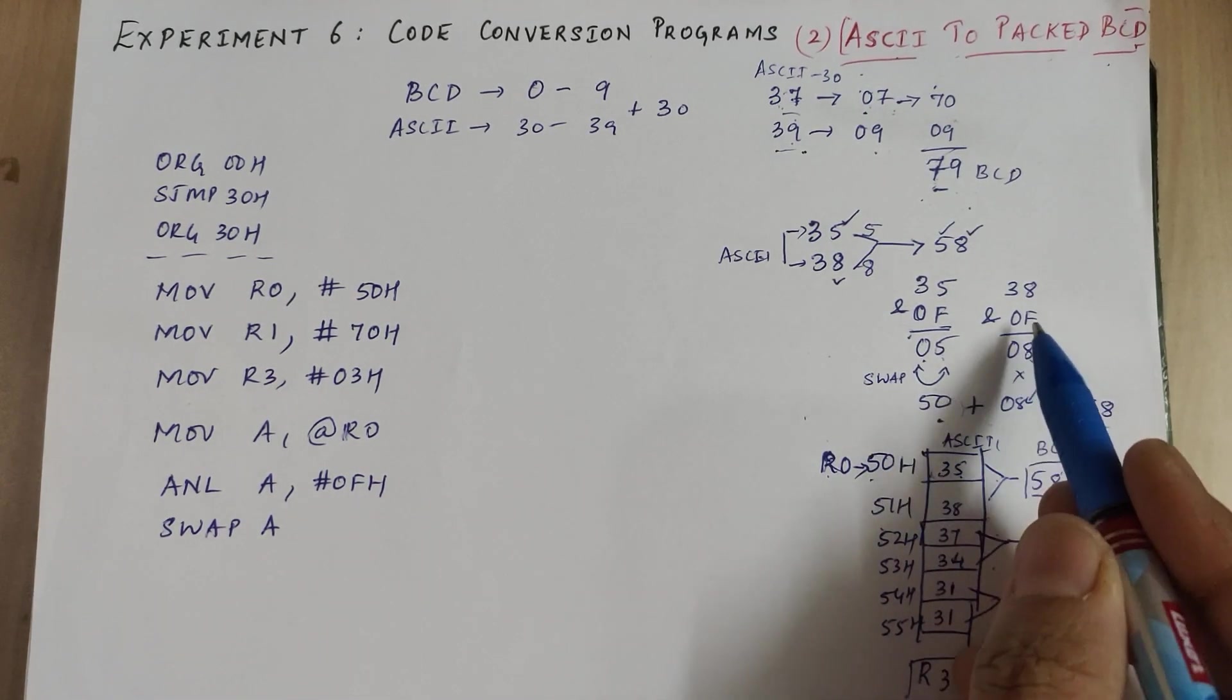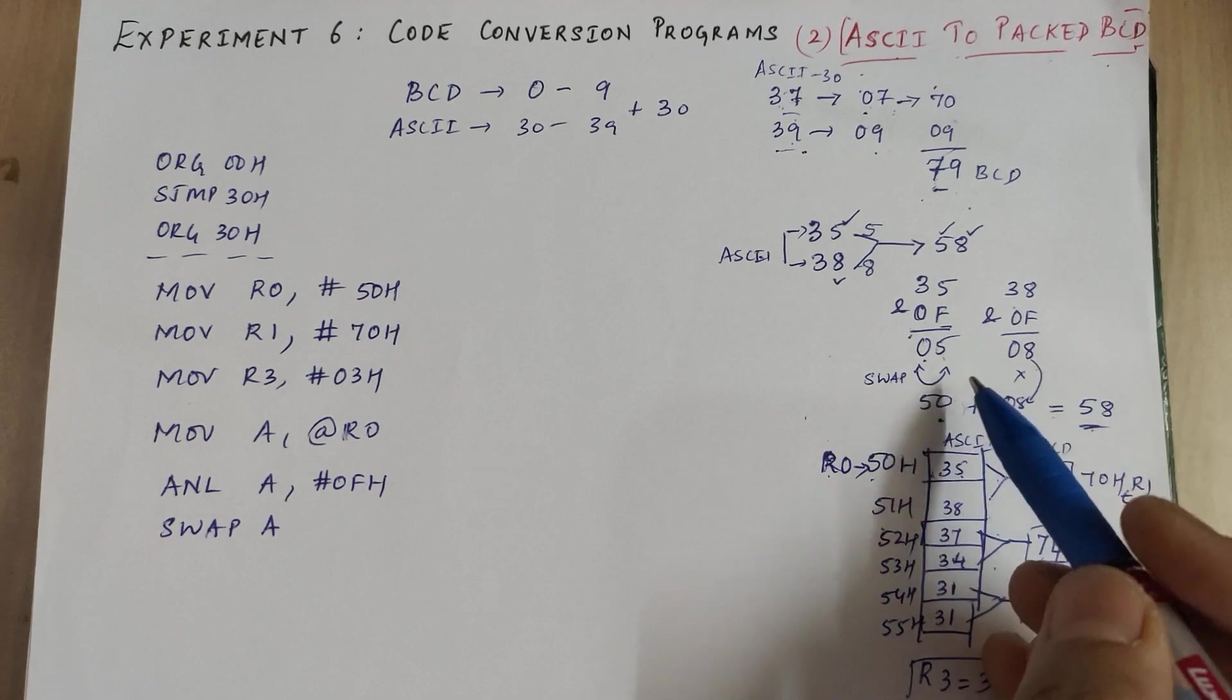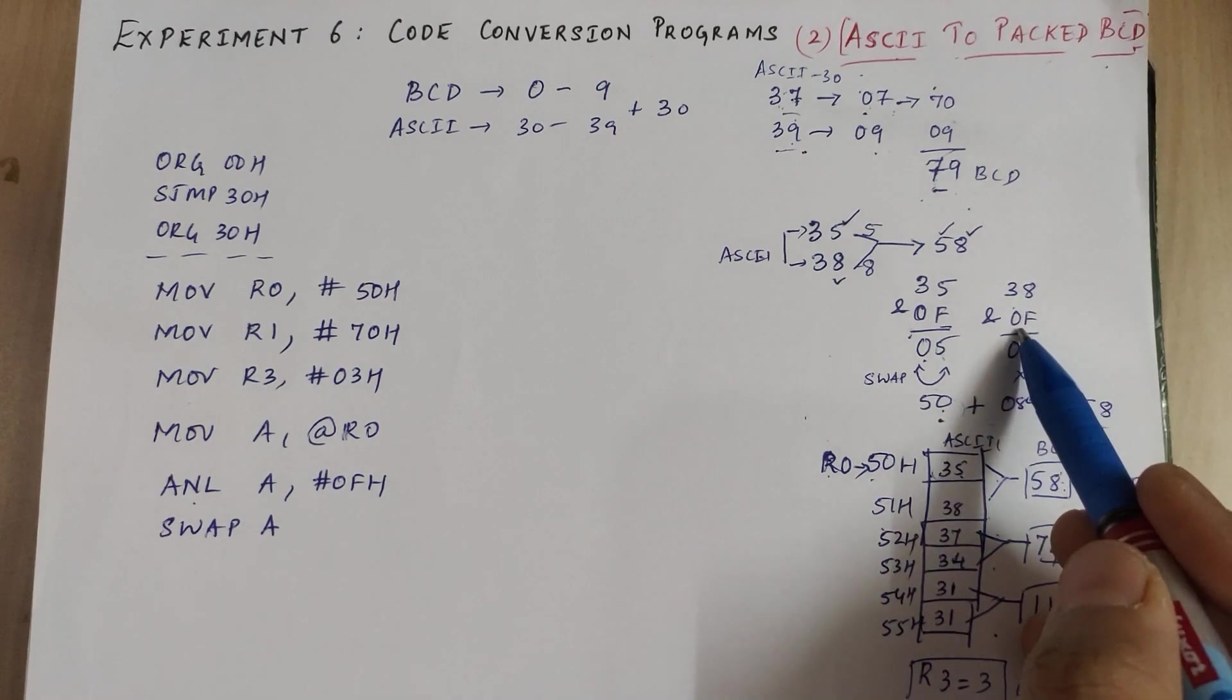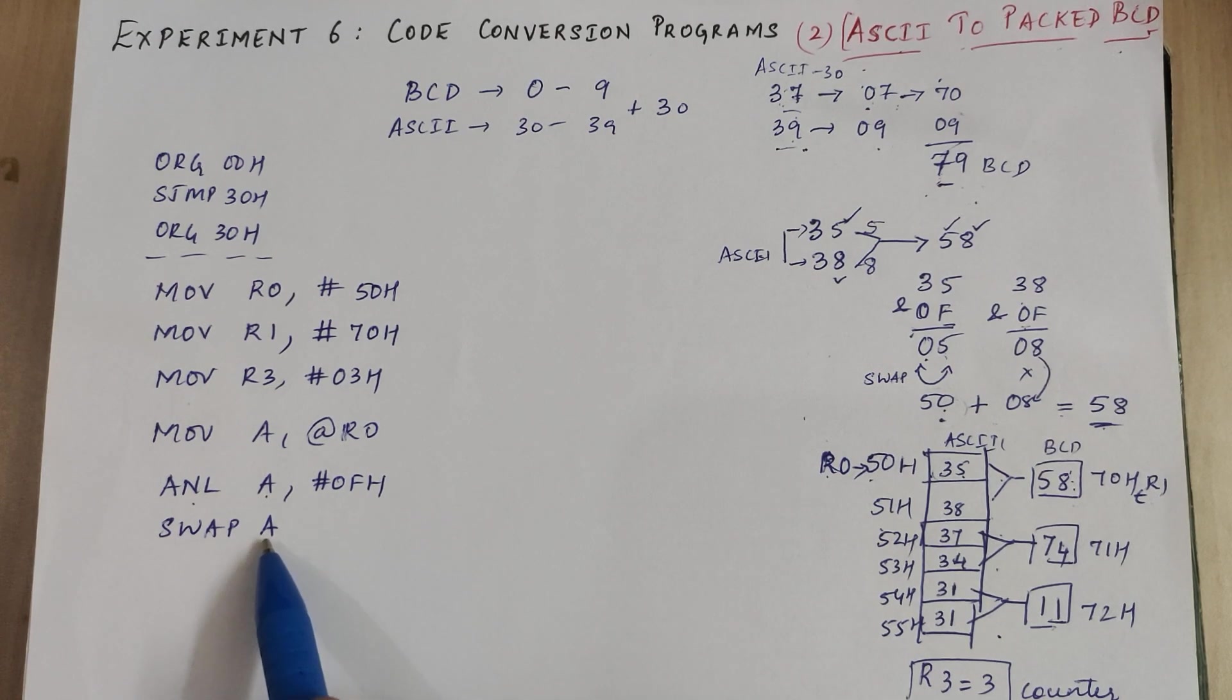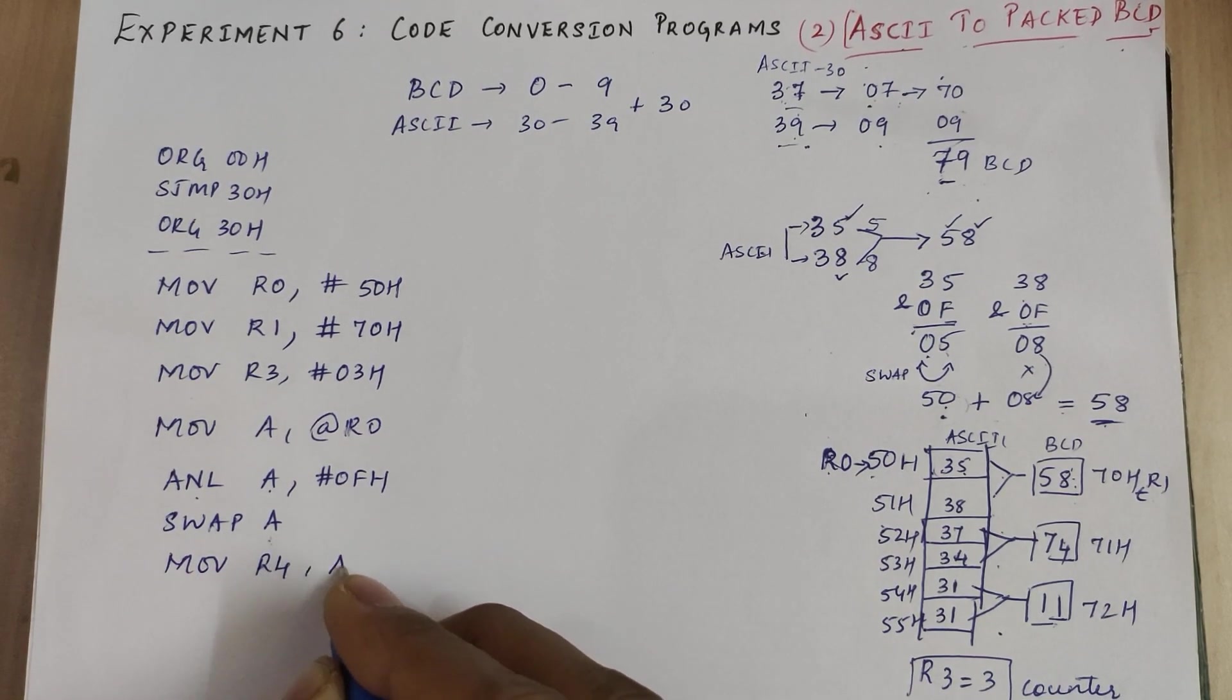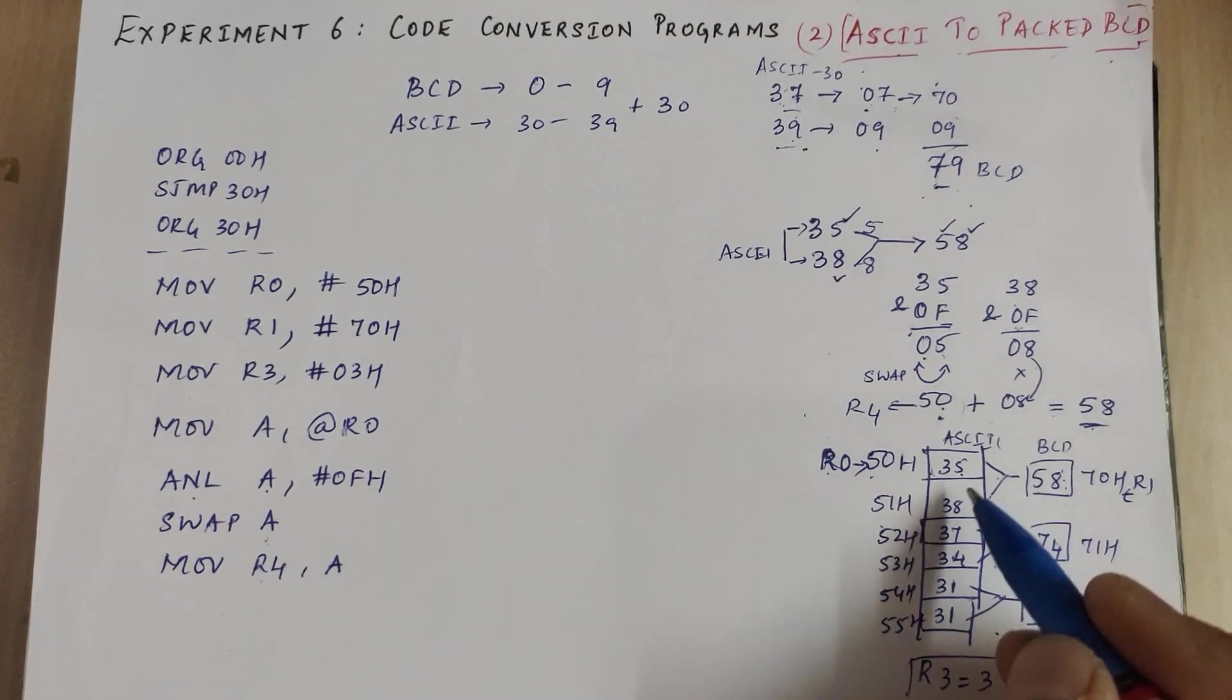To this 50 we need to add the bit obtained after ANDing the second number with 0F. We need back this 50 because AND logical works only with accumulator. The next instruction where we're ANDing, we need A, so we don't want to lose this accumulator's content 50H. So let us store it into another register say R4 temporarily. So right now 50 is stored in R4.